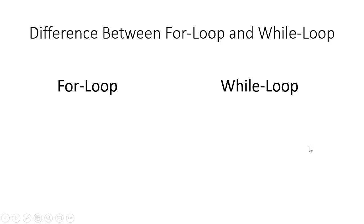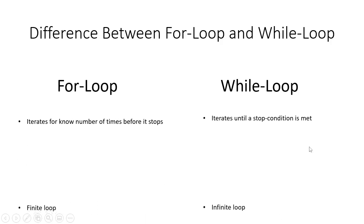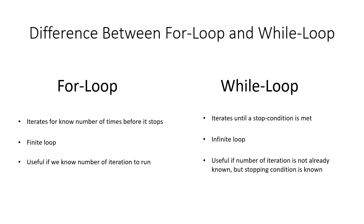When we have a block of code that needs to be repeated a fixed number of times, then a for loop is implemented. In other words, a for loop is a finite loop that iterates for a known number of times before it stops. On the other hand, a while loop iterates until a stop condition is met. In other words, if we need our code to be repeated while an exit condition has not been reached, we will use a while loop.